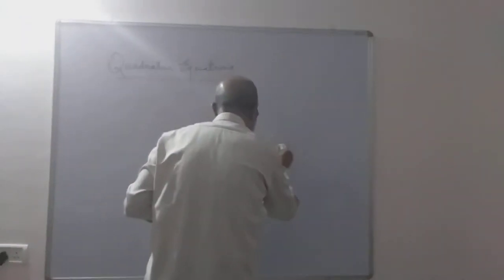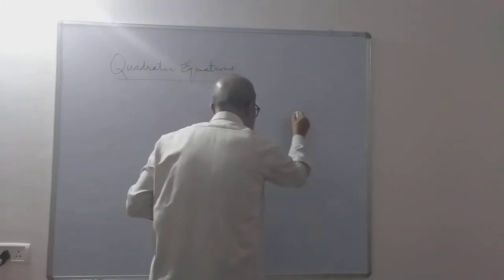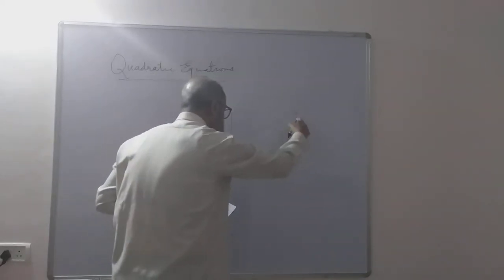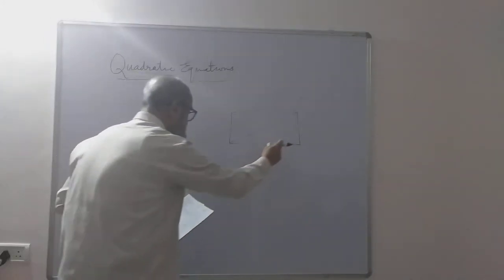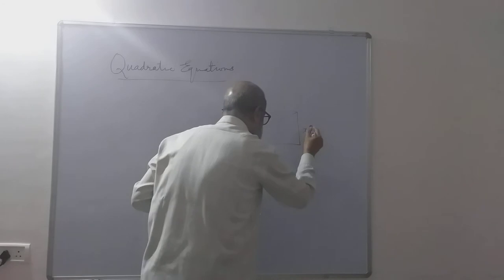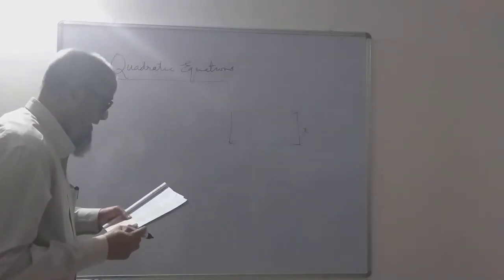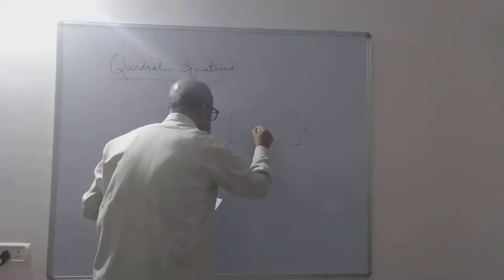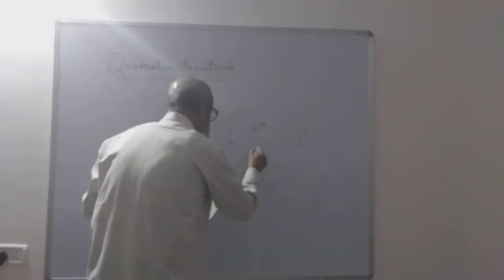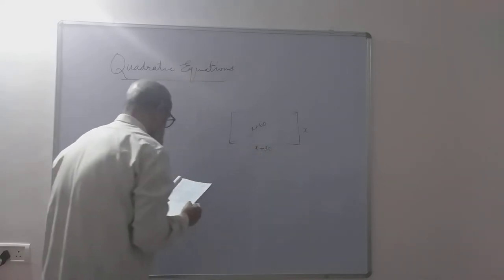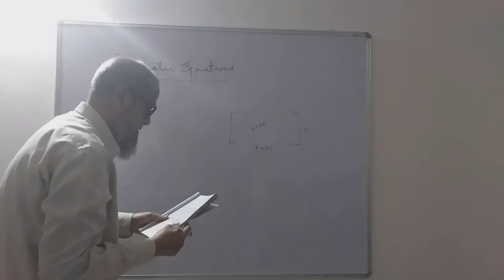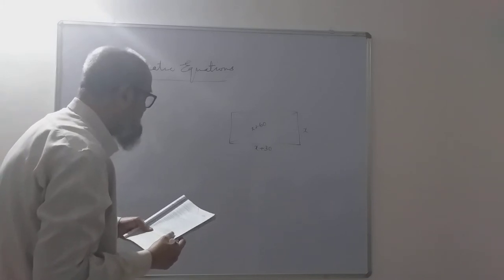Draw a rough figure of the rectangular field with its diagonal. Let the shorter side be x. Then the diagonal is x plus 60, and the longer side is x plus 30 - it is 30 meters more than the shorter side. Find the sides of the field.